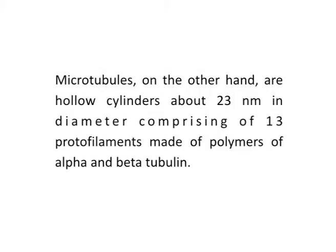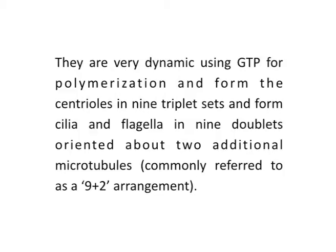Microtubules, on the other hand, are hollow cylinders about 23 nanometers in diameter, comprising of 13 protofilaments made of polymers of alpha and beta tubulin. They are very dynamic, using GTP for polymerization, and form the centrioles in 9 triplet sets and form cilia and flagella in 9 doublets oriented about 2 additional microtubules, commonly referred to as the 9 plus 2 arrangement. Microtubules participate in the formation of spindle fibers during cell division and are also the major components of cilia and flagella. They also play a role in the formation of the cleavage furrow during cytokinesis and in muscular contraction along with myosin.